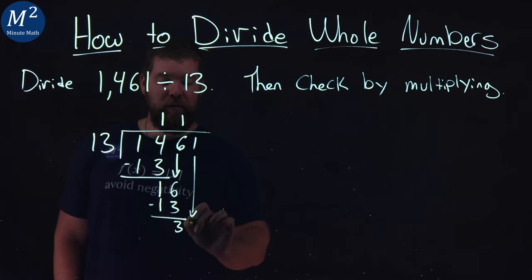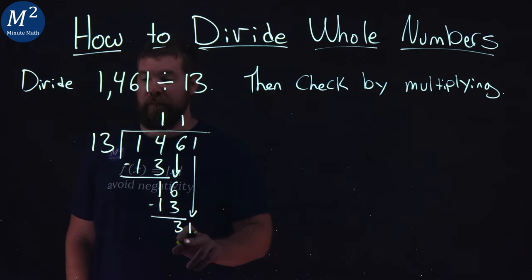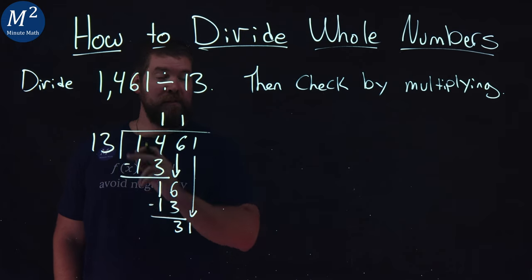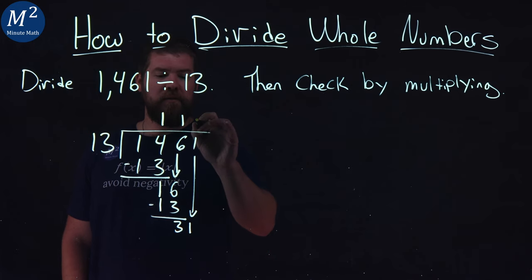We bring down the 1. Now, how many times does 13 go into 31? Well, 1 times is 13. 2 times is 26. 3 times would be 39. That's too much. So 2 times here.